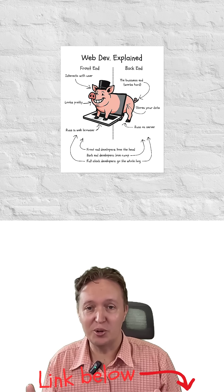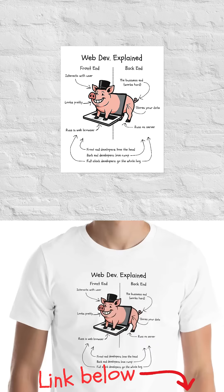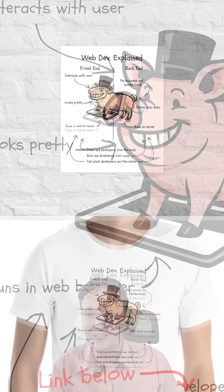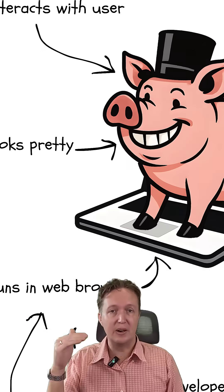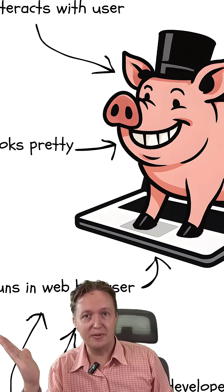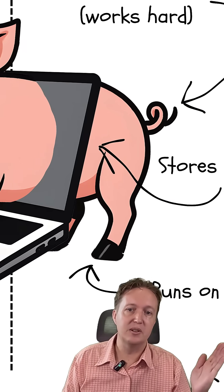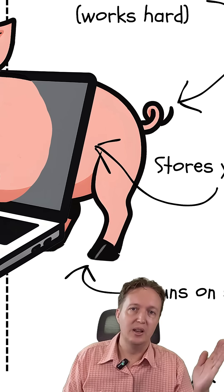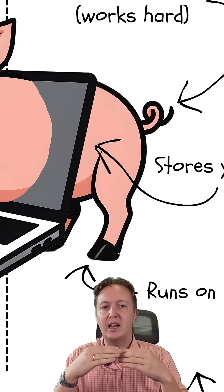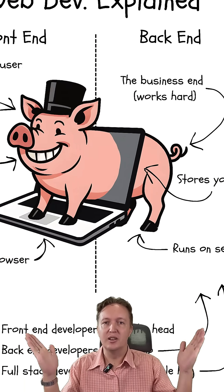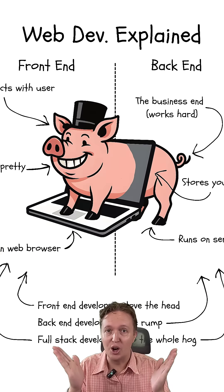Get this explanation on a poster or a shirt. Don't like a hog? Then have a RAM instead. Just remember: front end developers love the head, back end developers love the rump, and full stack developers go the whole hog.